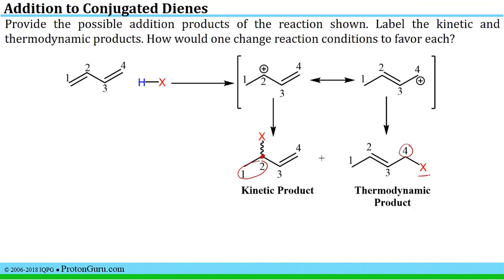The kinetic product is always the 1,2 addition product because of the proximity effect discussed in the primer. The thermodynamic product, however, is sometimes the 1,2 product and sometimes the 1,4 — how do we tell? The rule is that it is the most stable alkene. The 1,2 product has one non-hydrogen substituent off the doubly bound carbons, making it monosubstituted, while the 1,4 product is a disubstituted alkene. That is more stable, and that is why it's the thermodynamic product.